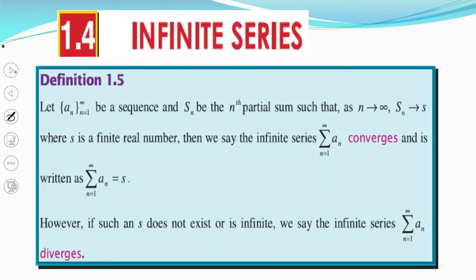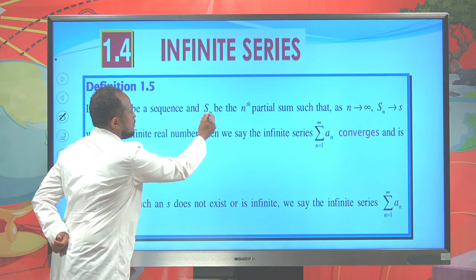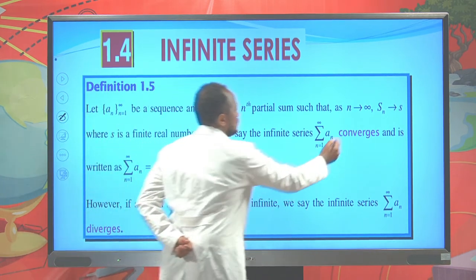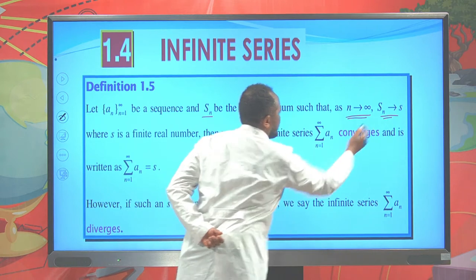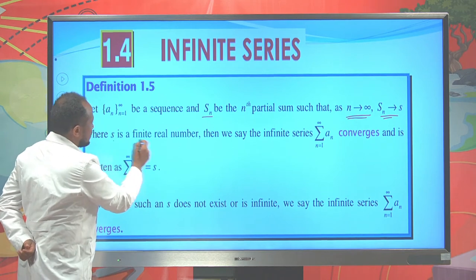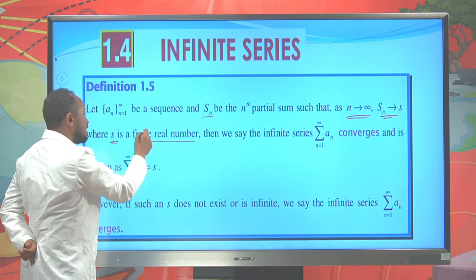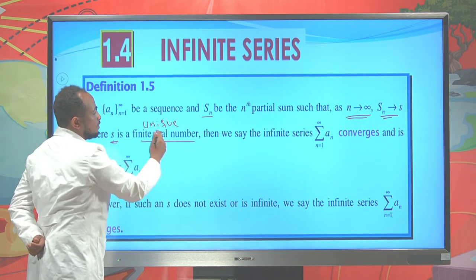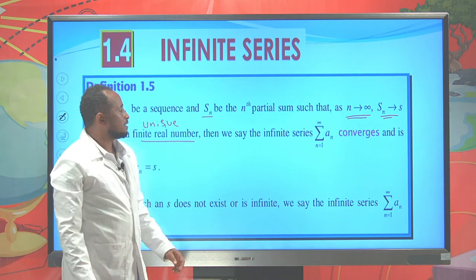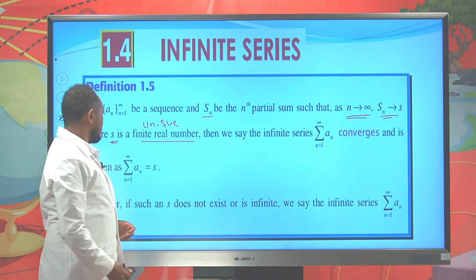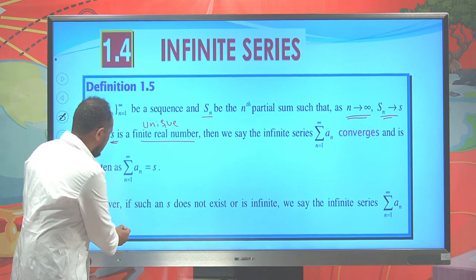Let a_n be a sequence, and S_n be the sum of n terms of this sequence. As n goes to infinity, if S_n goes to S, where S is a finite, unique real number, then we say that this infinite series converges. Otherwise, if S does not exist, it diverges.